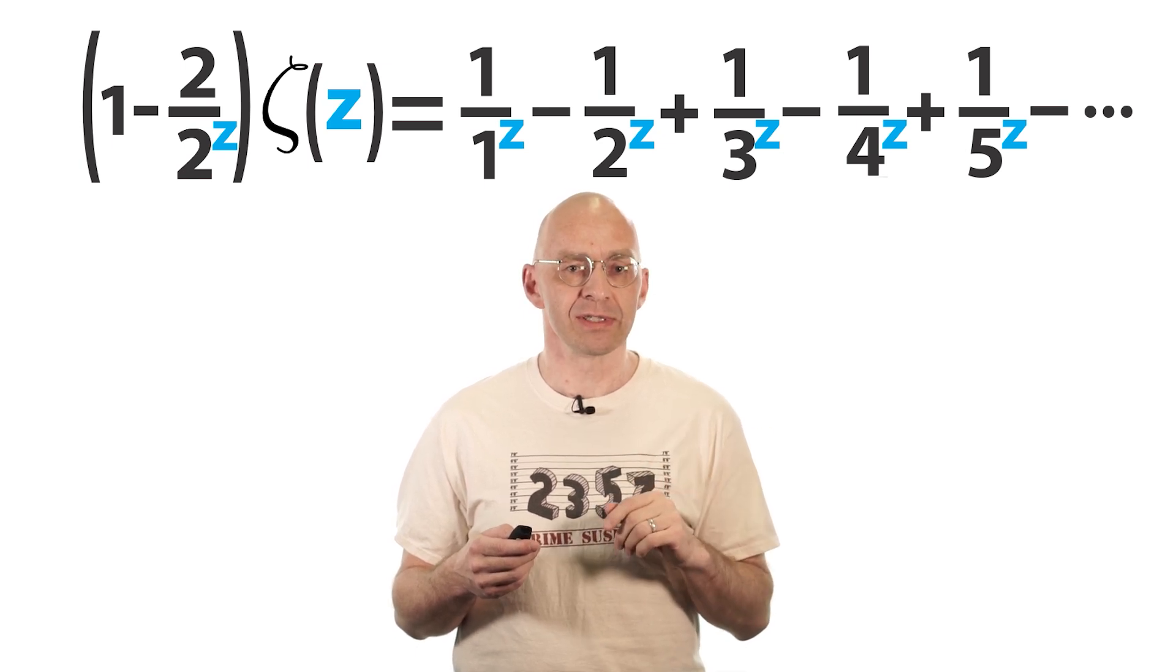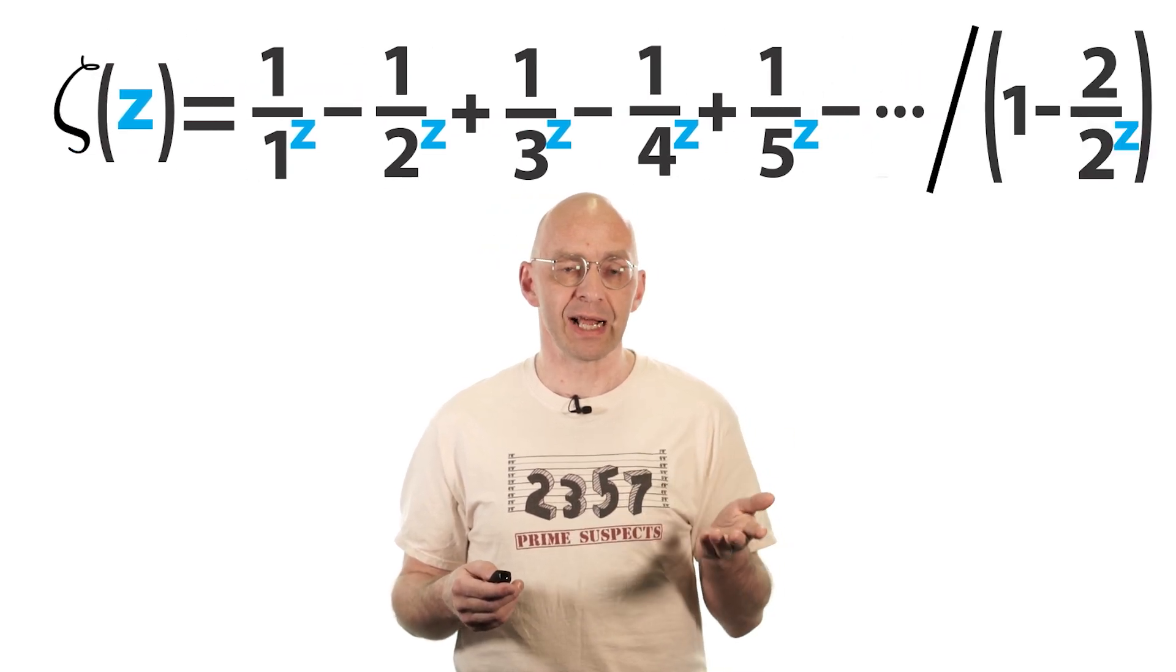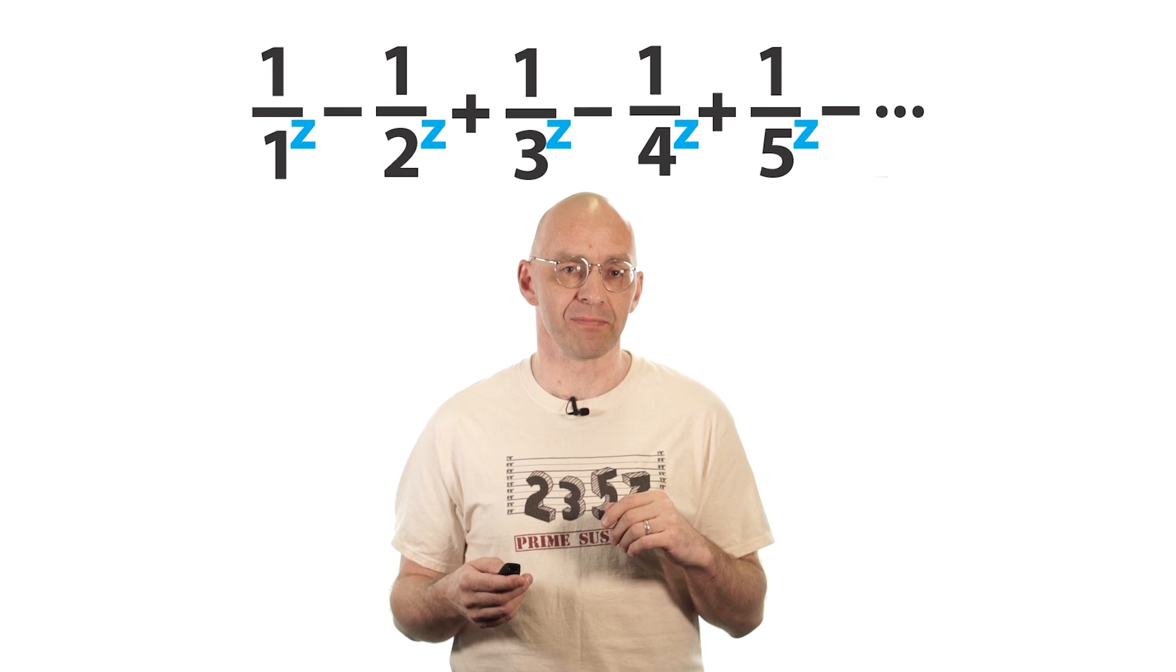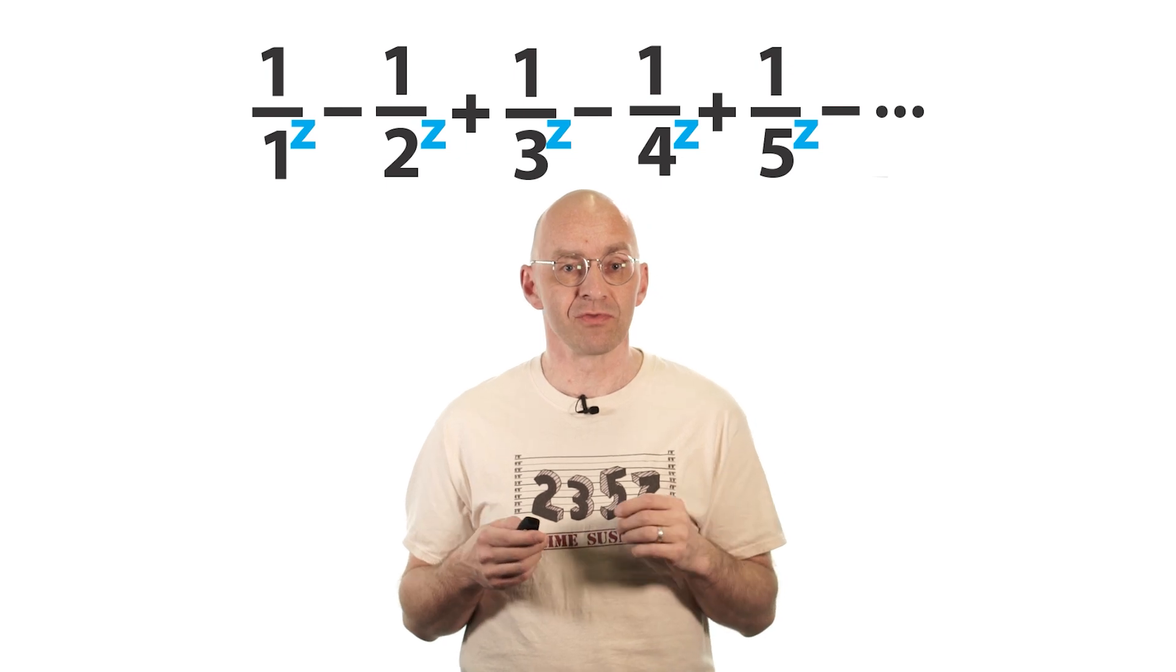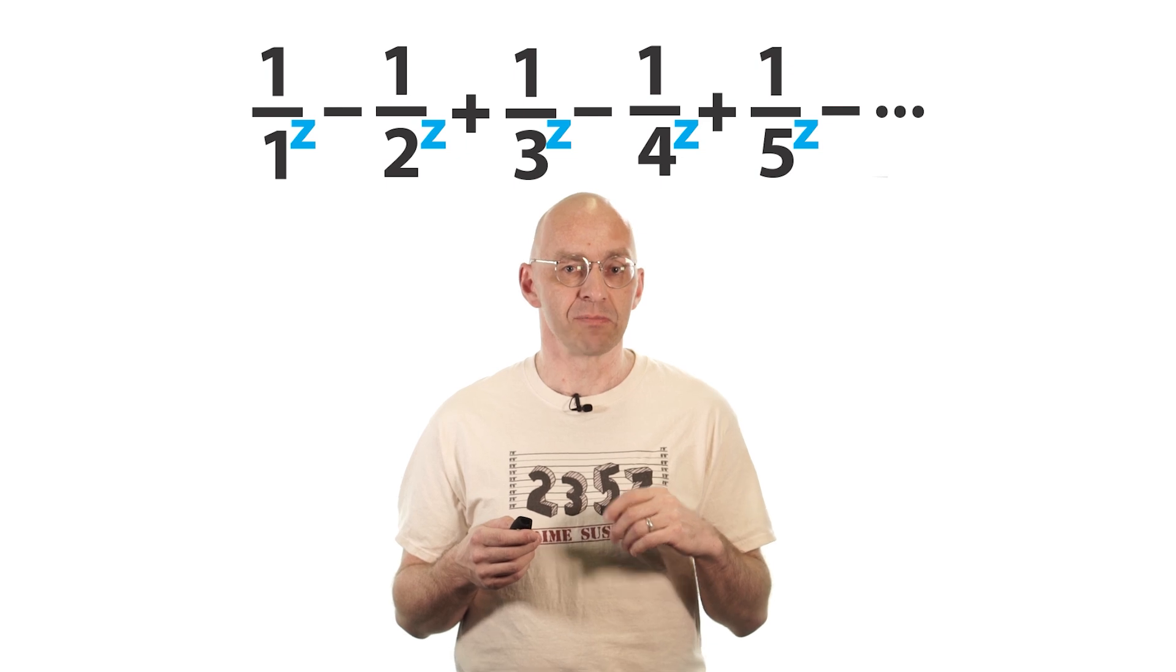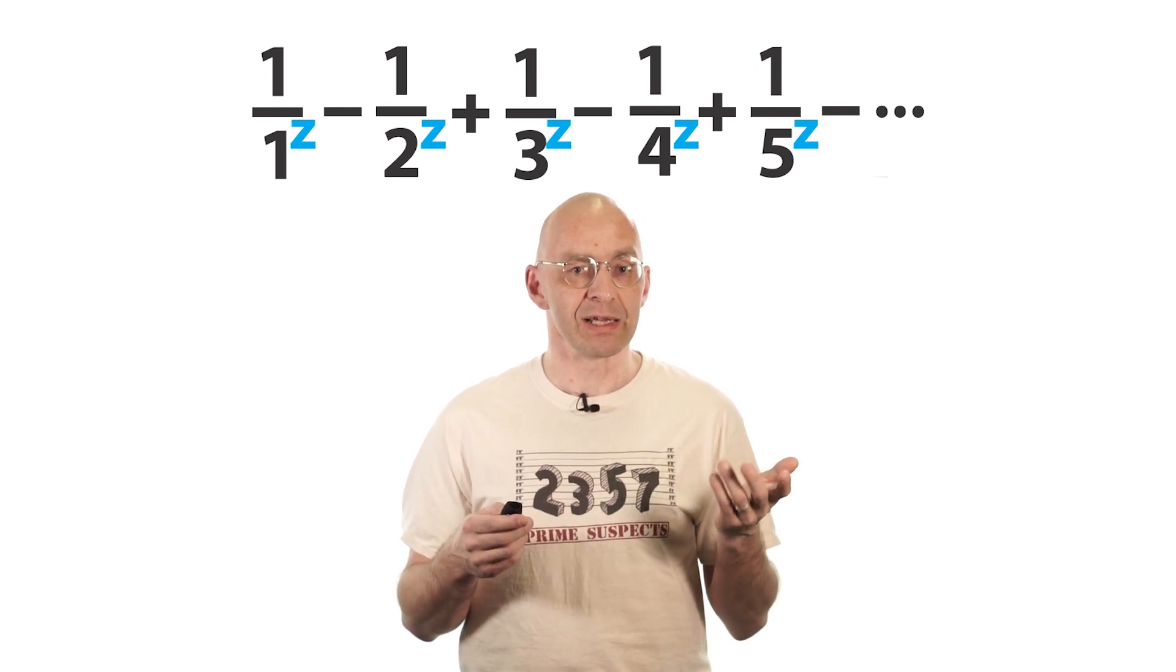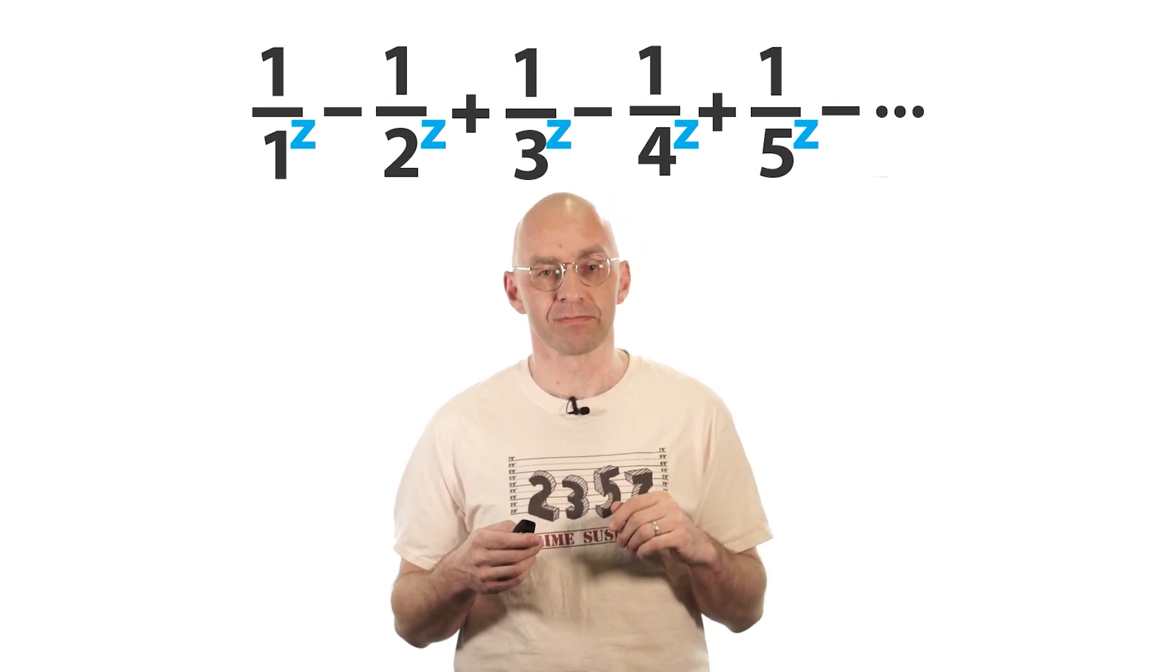The plus minus alternating sum at the core of this definition is in many ways much much better behaved than the original pluses only sum. I'll use it and some of Euler's other ingenious ideas to give a really accessible description of the mysterious analytic continuation of the zeta function that many of you will have heard of. And this will include a new take on the whole 1 plus 2 plus 3 equals minus 1 over 12 business as well as chasing down those elusive zeros that the Riemann hypothesis is about. Stay tuned.